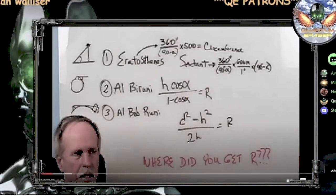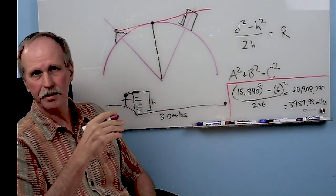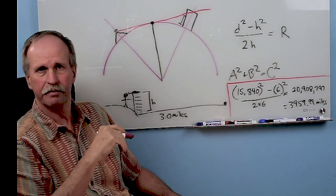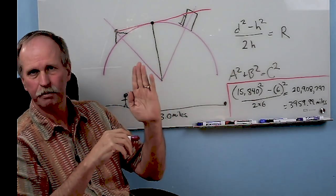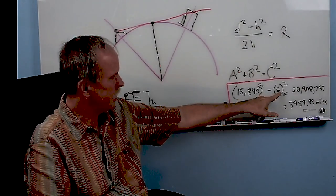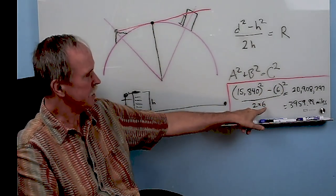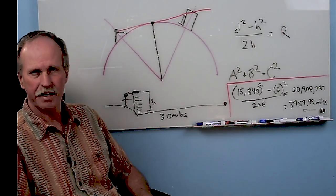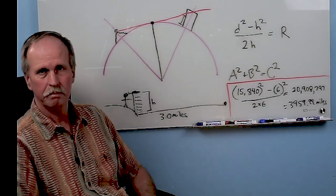And divided it by two times the hidden height, you came up with the radius of the Earth. Yeah, sure we did, Bob. Well, since John can't seem to figure this out and never bothered checking it, let's go ahead and go through it together. Now, if an object has to be at least six feet off the water to be seen three miles away, that's how far it is to our horizon.